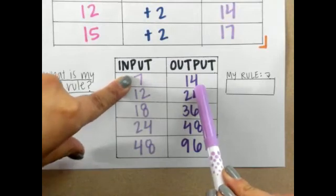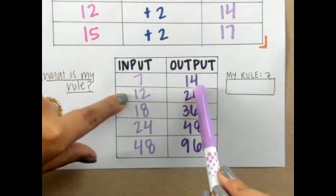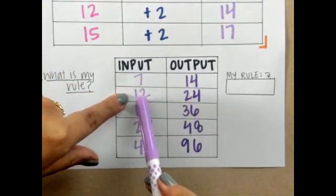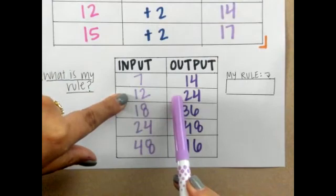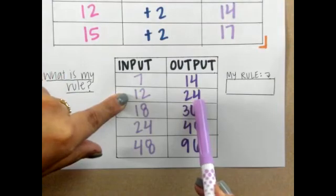Let's see if that same rule of times 2 applies for my next number. I have 12. 12 times 2, that gives me 24. Let's see if that keeps working.